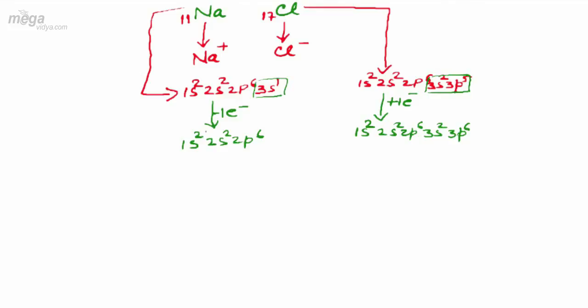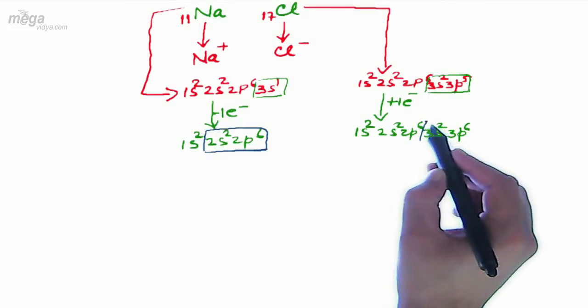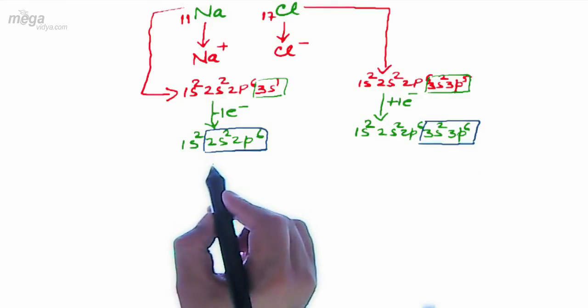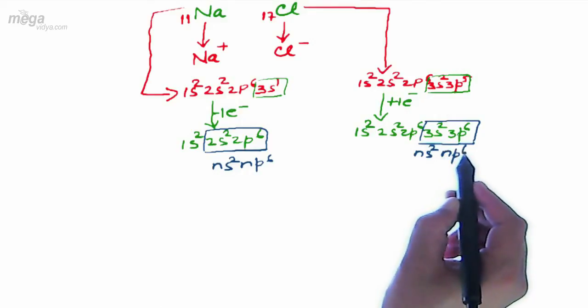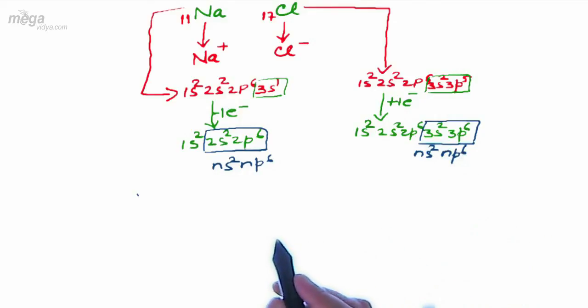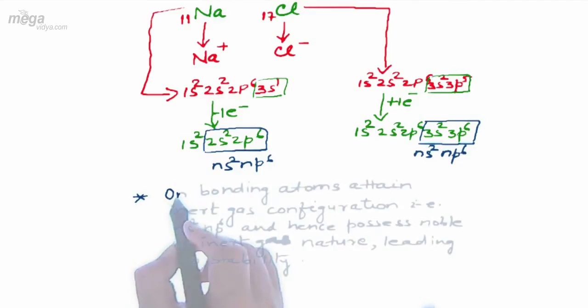If we observe the valence shell configuration of sodium and chlorine, it is resembling ns2 np6 configuration in both cases. So now we can conclude that during bonding species attain inert gas configuration and hence get stabilized.